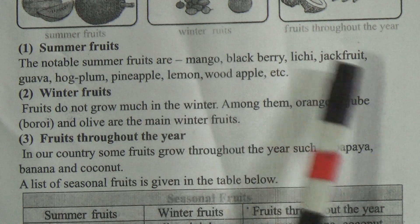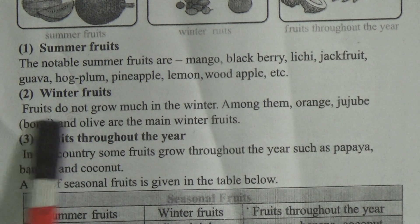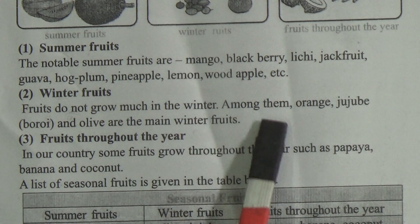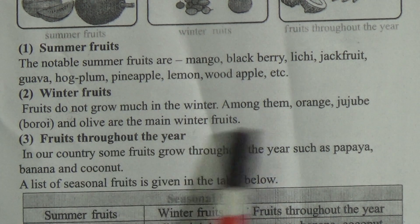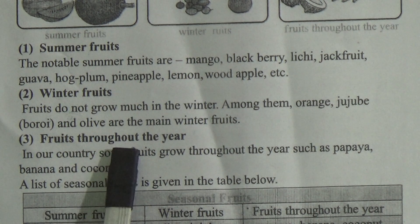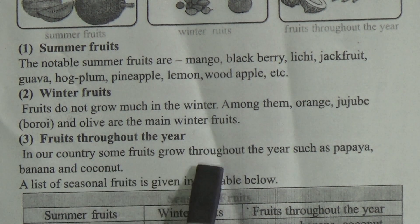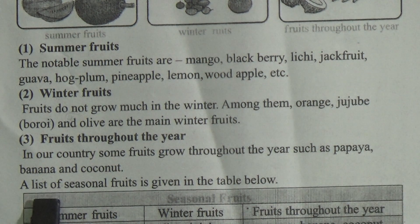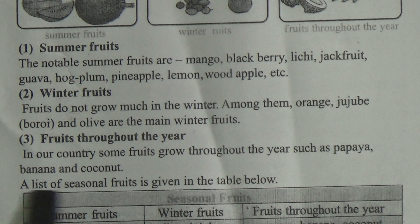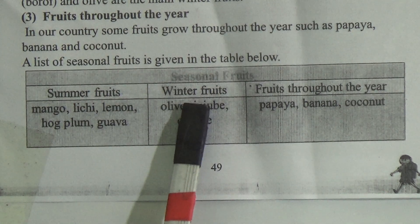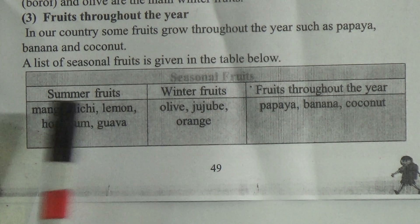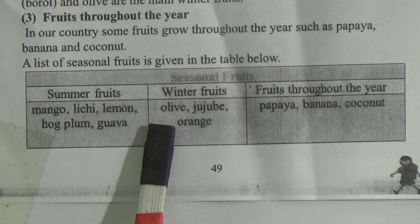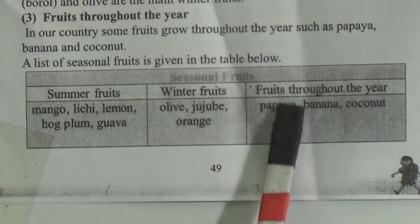These are examples of summer fruits. Now, winter fruits — fruits do not grow much in the winter. Among them, orange, jujube (that means boroi), and olive are the main winter fruits. In our country, some fruits grow throughout the year, such as papaya, banana, and coconut. A list of seasonal fruits is given in the table: summer fruits — mango, lychee, lemon, hog palm, guava; winter fruits — olive, jujube, orange; and fruits throughout the year — papaya, banana, and coconut.